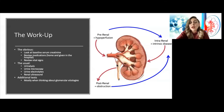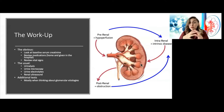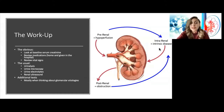Post-renal is essentially anywhere past the ureter where urine can no longer flow out of the body. It starts backing up into the kidney — the pyramids get completely dilated and filled with urine, the cortex where filtering happens gets completely compressed. Filtration can't happen, and similarly, prolonged obstruction can also lead to intrinsic disease.